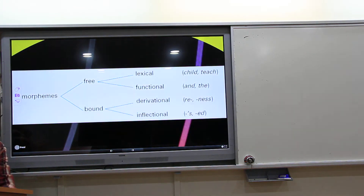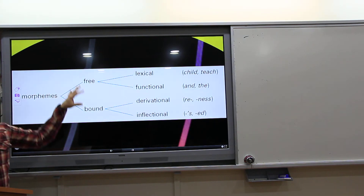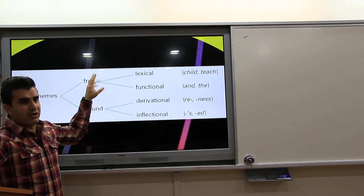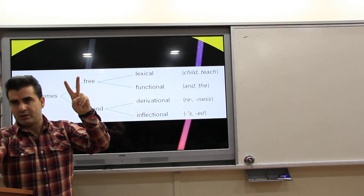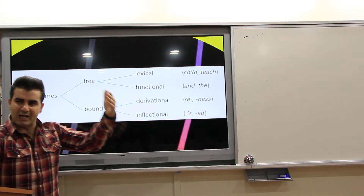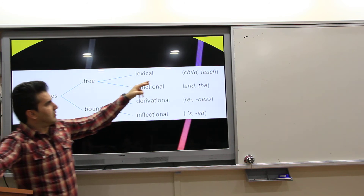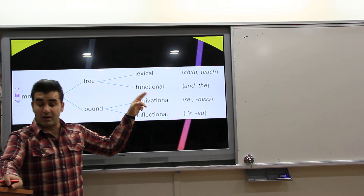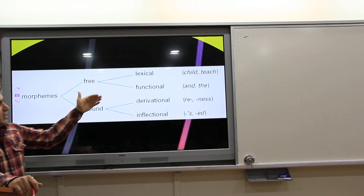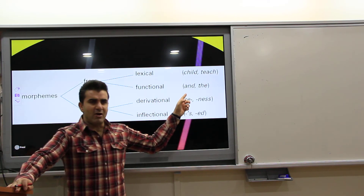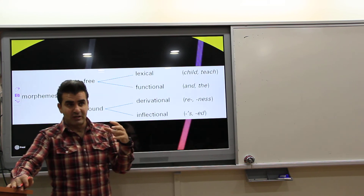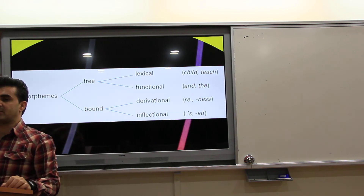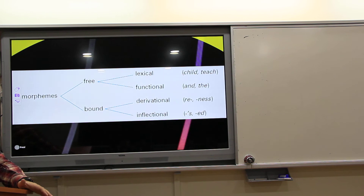So, this is the summary of morphemes. We have morphemes — either free or bound. Free can stand alone; bound cannot, they must be attached. Free morphemes are either lexical, which have meaning, or functional, which have a grammatical function. Bound morphemes are either derivational or inflectional. Derivational morphemes change the category and the meaning; inflectional morphemes do not change the grammatical category of the word they are attached to.